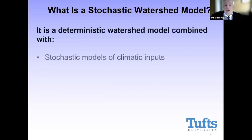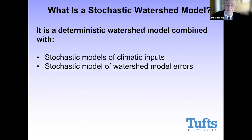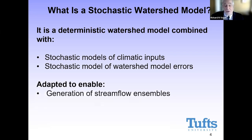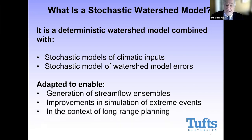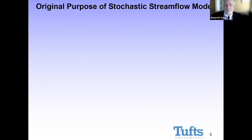Stochastic watershed models are basically a deterministic watershed model combined with a stochastic model of the inputs, as well as a stochastic model of the errors that were minimized during calibration. The deterministic model is then adapted to enable generation of streamflow ensembles, improvements in simulation of extreme events, and all in the context of long-range planning. It is routine to generate ensembles from rainfall-runoff models for short-term flood forecasting — that is a literal industry with conferences and textbooks. But there are less than half a dozen papers on doing this for long-range planning, which is why I'm pushing this idea for the future of our field.